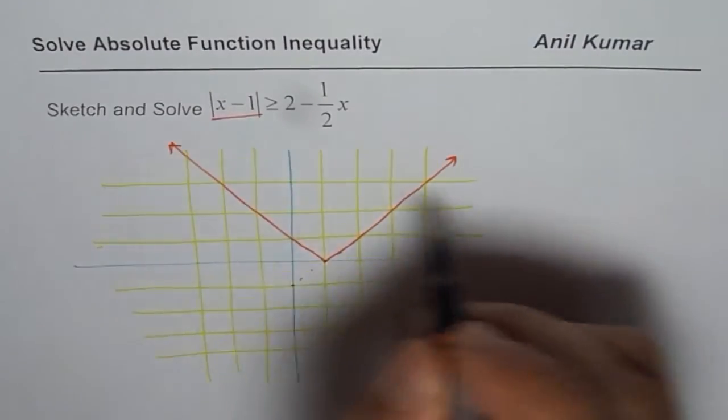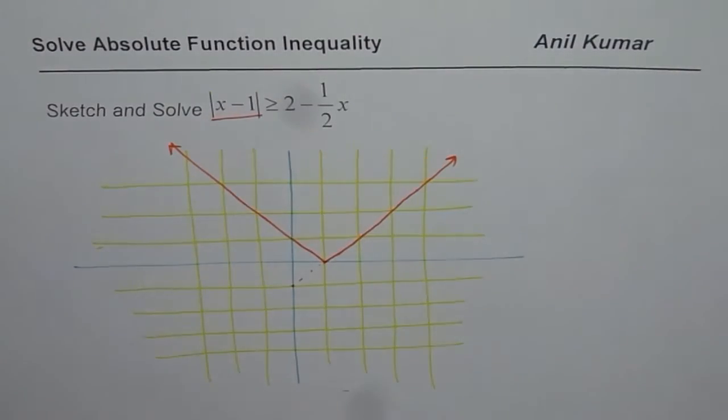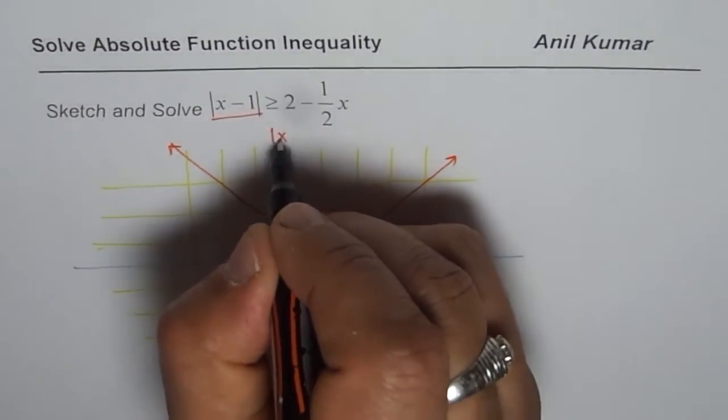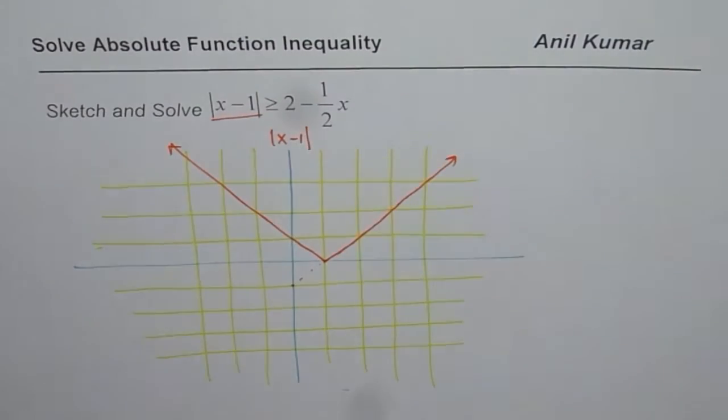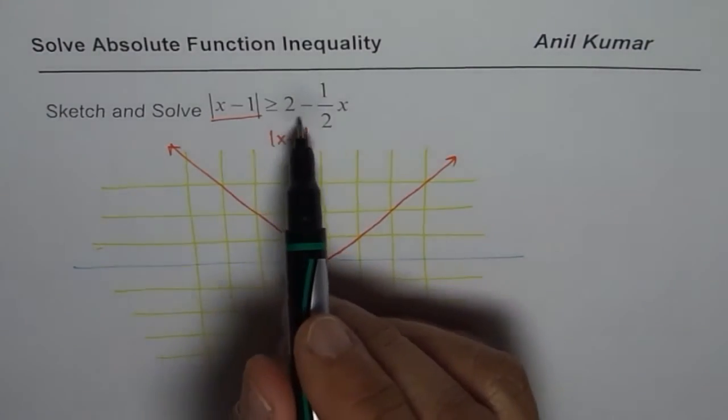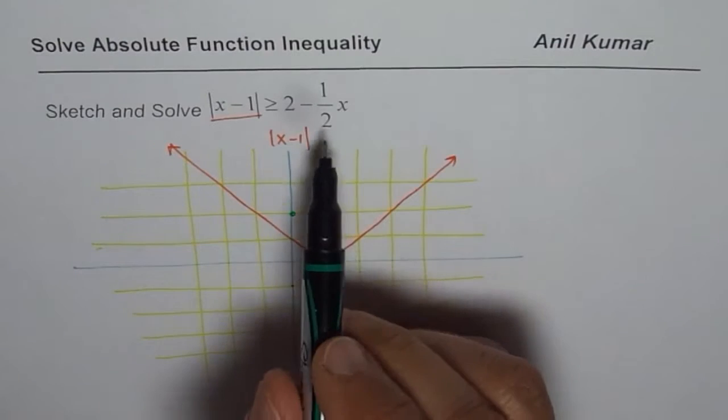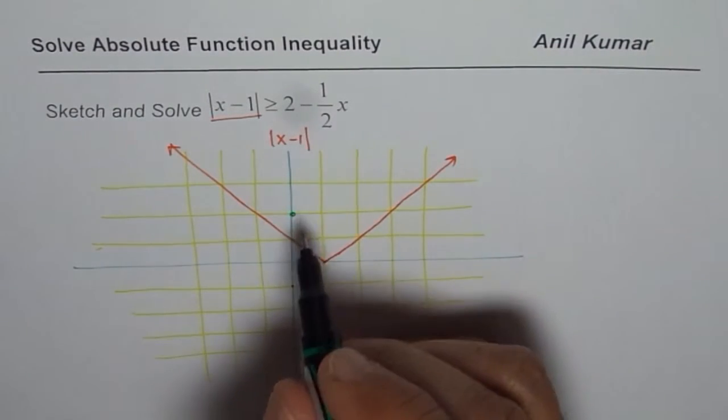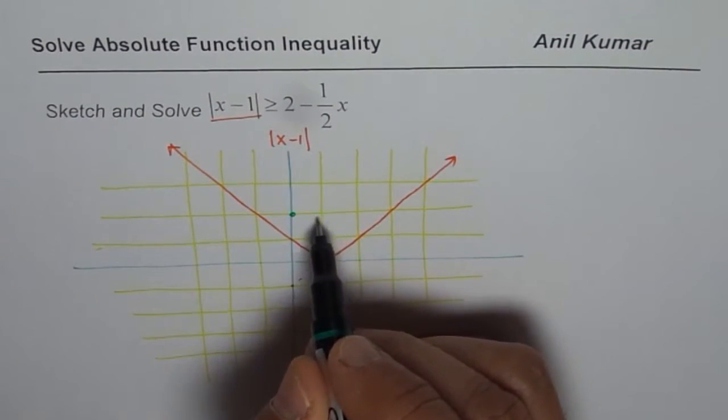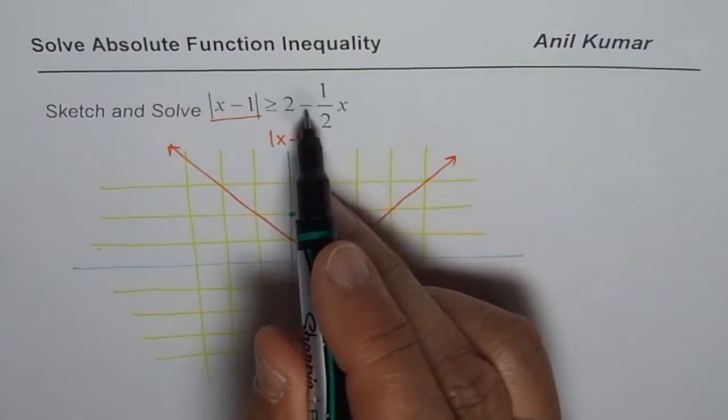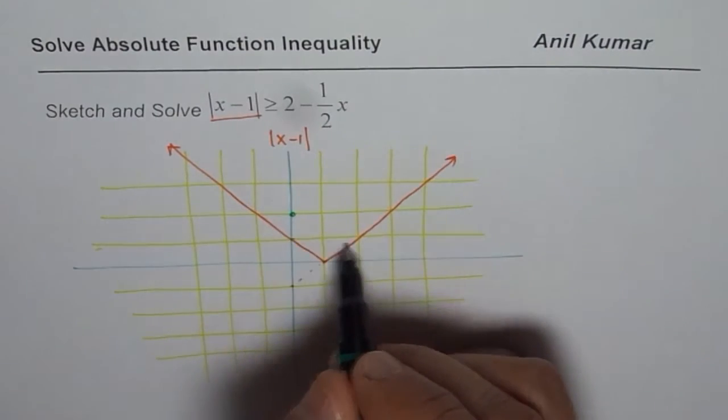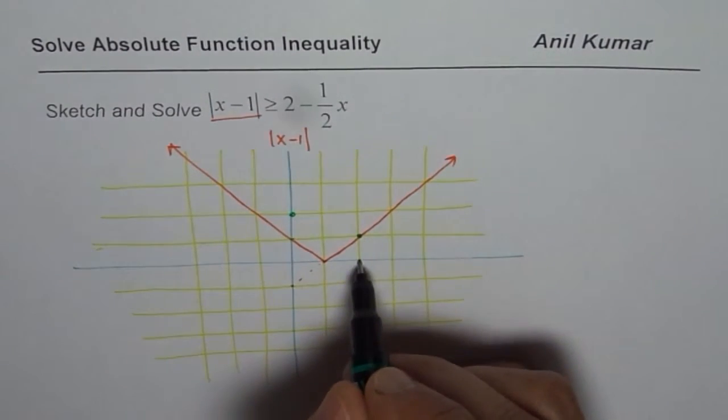Now we will sketch the graph for the function 2 minus half x. So 2 is your y-intercept, slope is negative half. That means one unit we can go down and 2 right, so 1 down 2 right, that is a good point. One down 2 right, that is another point like this.